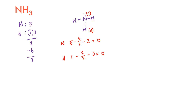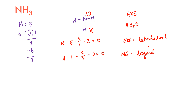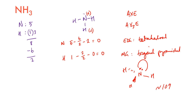Using AXE notation for NH₃: A is central nitrogen, X₃ are the 3 hydrogens, and E₁ is the 1 lone pair, giving AX₃E. This gives an electron domain geometry of tetrahedral and a molecular geometry of trigonal pyramidal, much like SO₃²⁻ earlier, with bond angles of approximately 109.5 degrees.